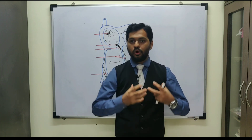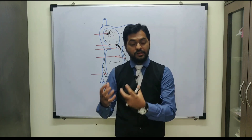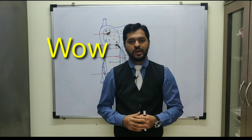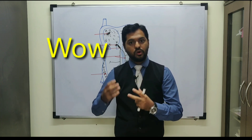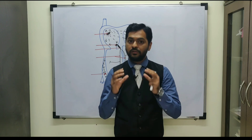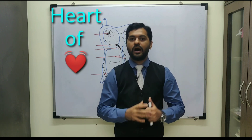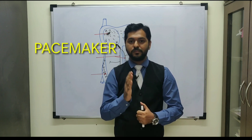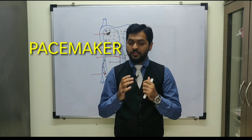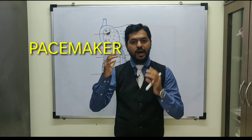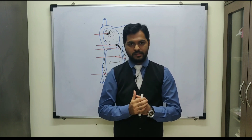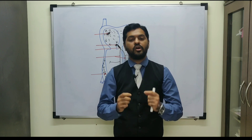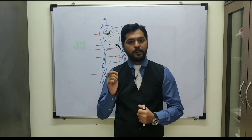If we take the human heart out of the body, still it can keep on pumping. The reason for that is the heart is controlled by a structure within the heart itself, which we call the 'heart of heart' and also the pacemaker. This is because the brain can only regulate the heart, it does not control it, and that is why the human heart is called myogenic.